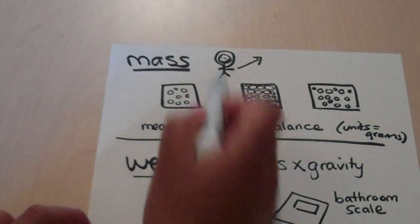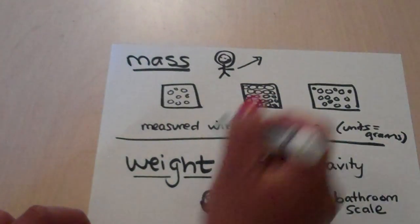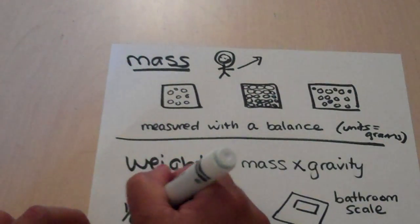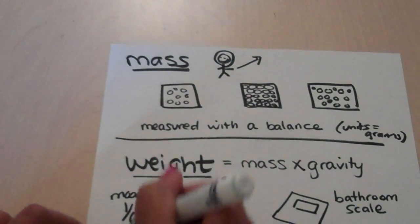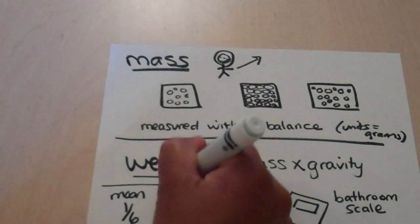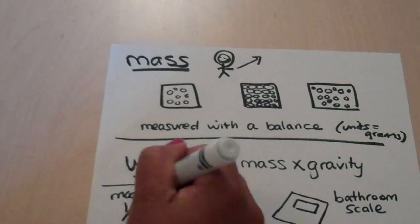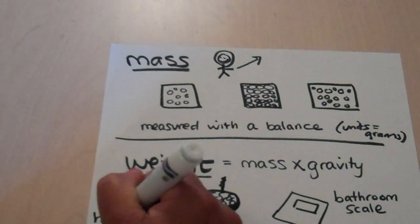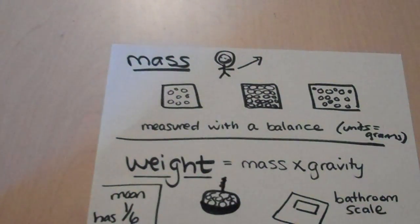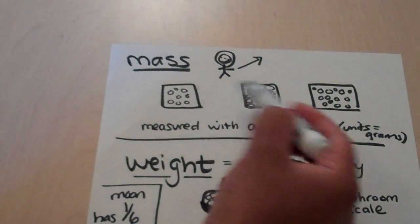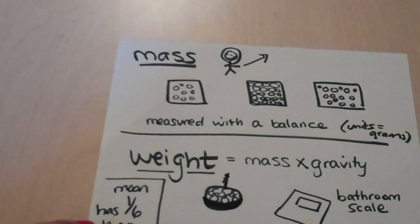To the moon. You will weigh different, because the moon has one-sixth the amount of gravity than Earth. And so, because there's less gravity to pull down on the particles that make up you, it's going to be a different weight.